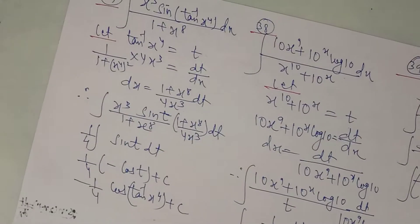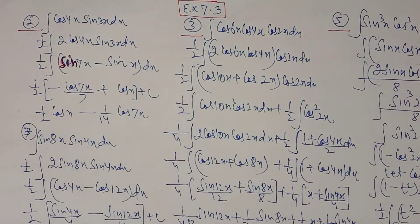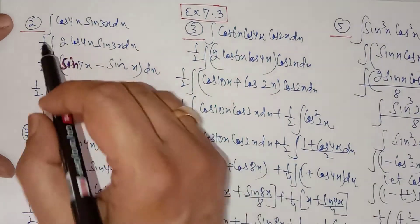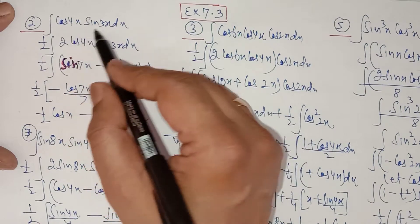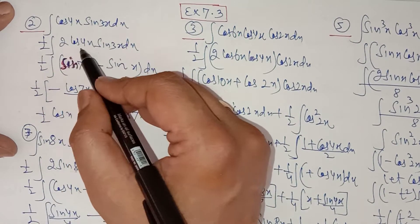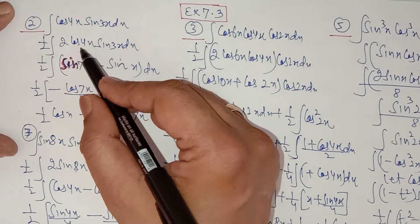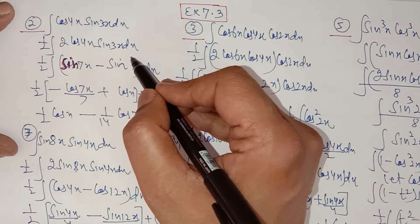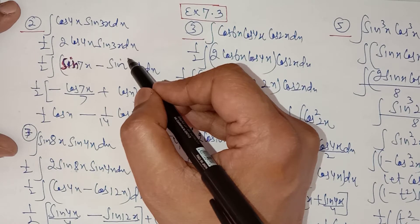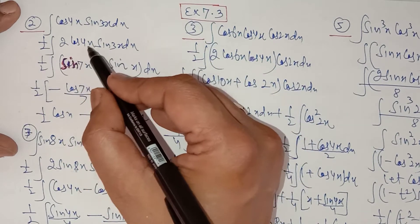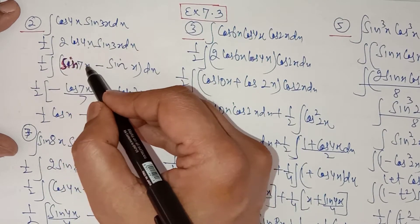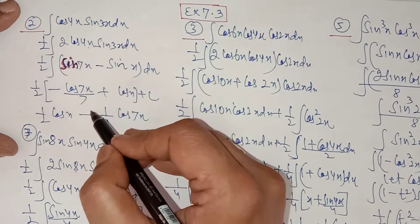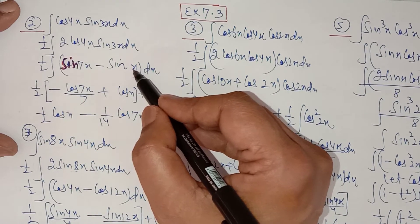This is integration using trigonometric identities. Now question 2 of exercise 7.3: it is the integral of cos 4x · sin 3x dx. This is a product, so multiply and divide by 2 to use the formula 2cosA sinB = sin(A+B) - sin(A-B). Applying this: 2cos4x sin3x = sin(4x+3x) - sin(4x-3x) = sin 7x - sin x. The integral of sin 7x is -cos 7x / 7, and the integral of sin x is -cos x, which becomes cos x.